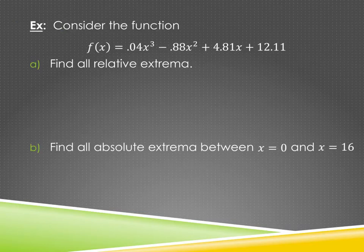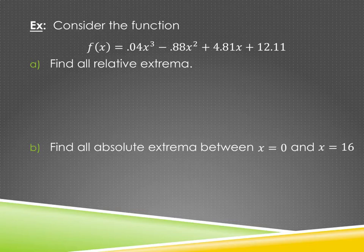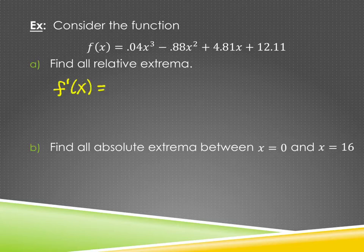Here's our first example. Consider the function f(x) = 0.04x³ − 0.88x² + 4.81x + 12.11. Find all relative extrema. Relative extrema means finding where f′ equals zero, so our first step is to find f′.